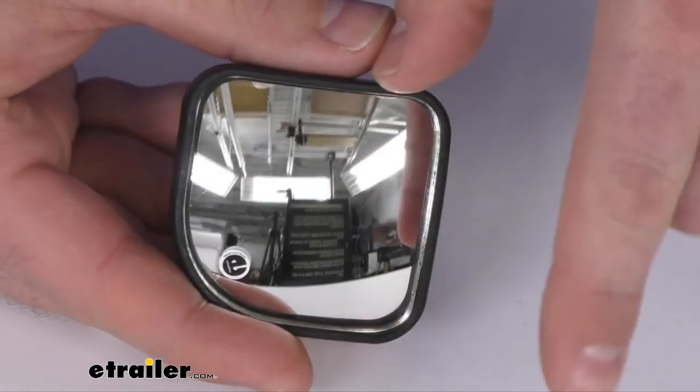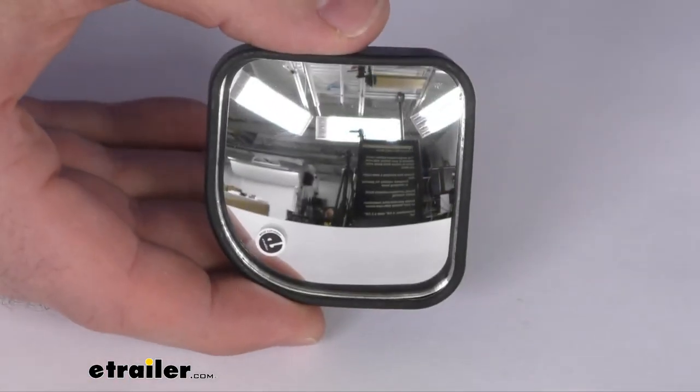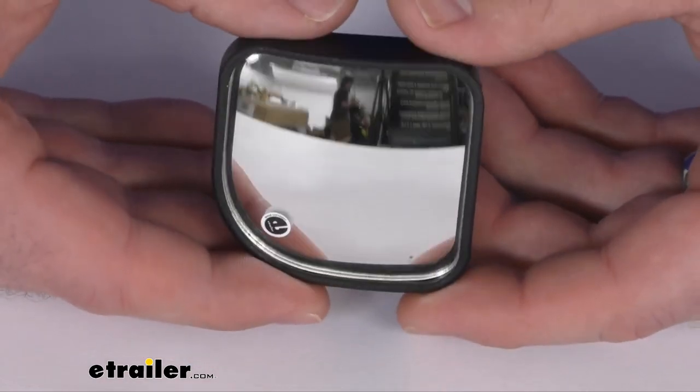It does have a convex lens to it, so it's going to help provide a nice wide angle view to help increase your visibility so that you can safely pass other vehicles, change lanes, and that sort of thing.